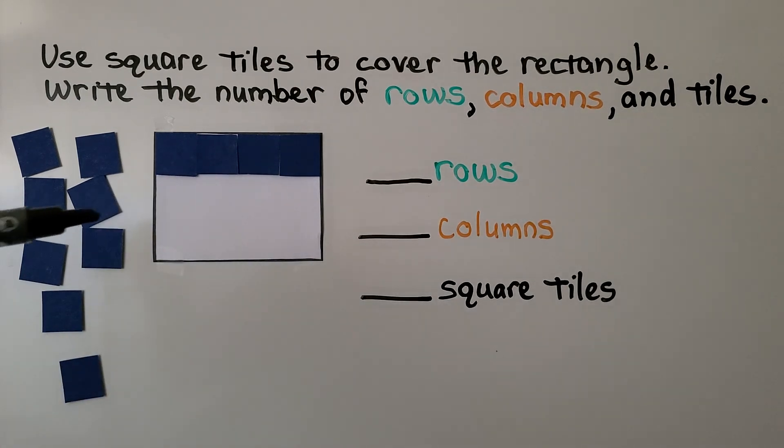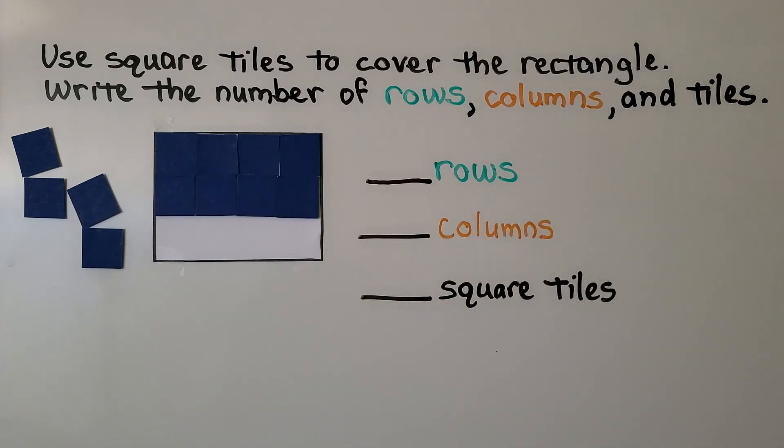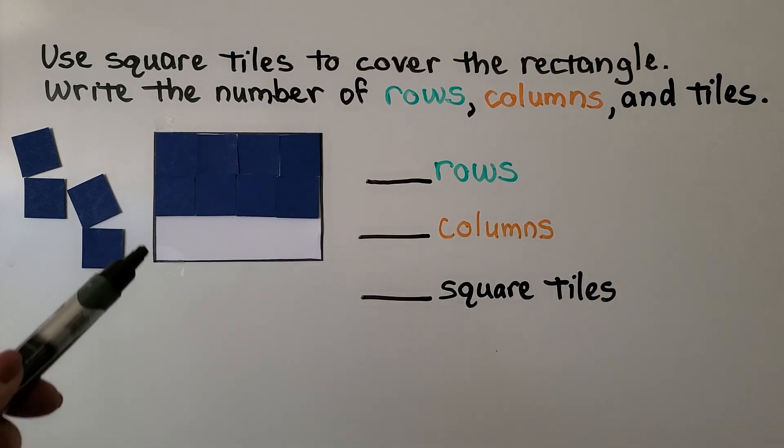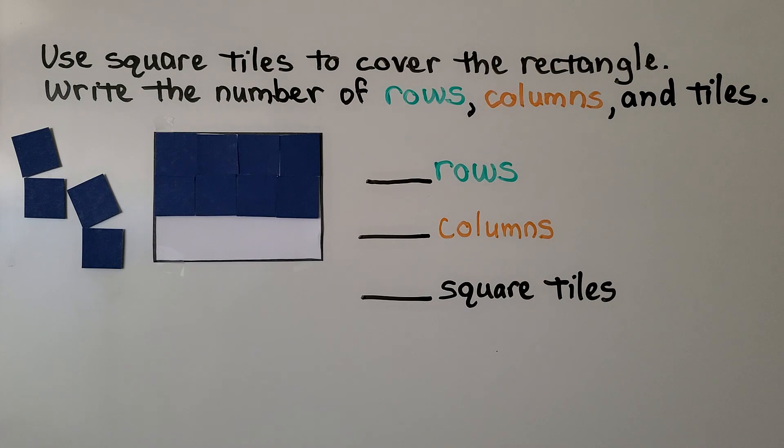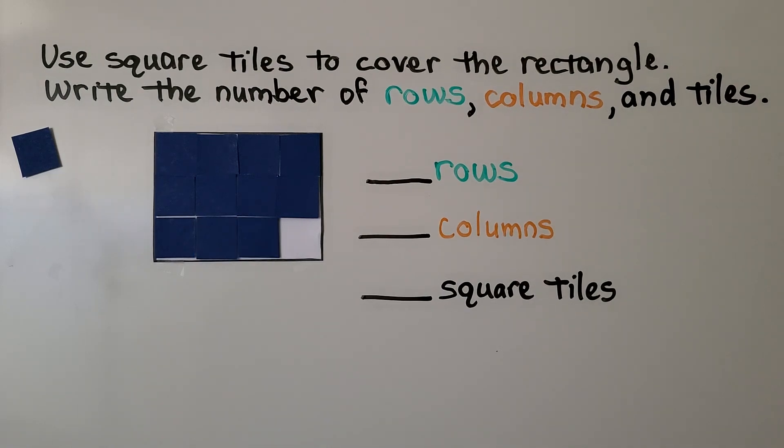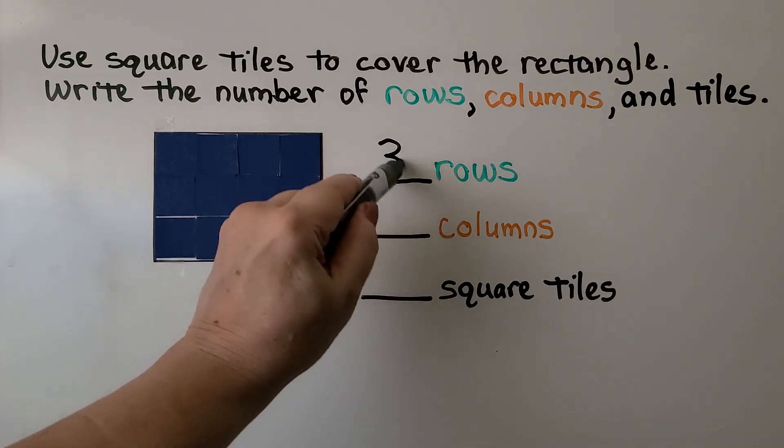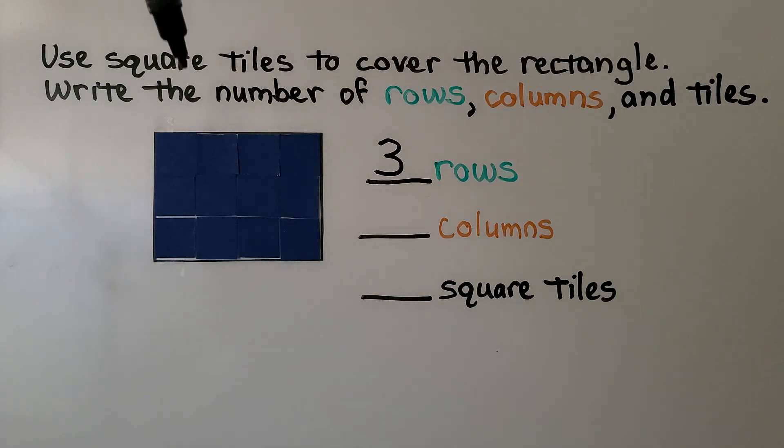We make another row. And I can make another row. I have 1, 2, 3 rows. I have 1, 2, 3, 4 columns.